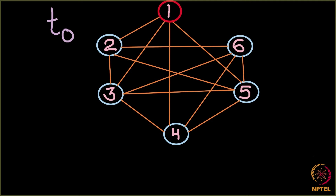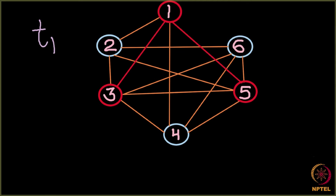Node 1 gets measles on day 0. On the first day, node 1 has 4 neighbours: nodes 2, 3, 4, and 5. It tries infecting each of these neighbours with probability P, and let's say it is able to infect node 3 and node 5. So on day 1, node 1 infects node 3 and node 5.